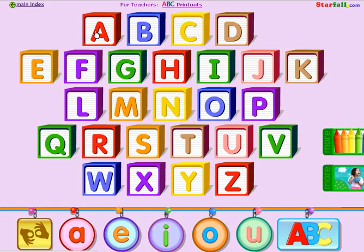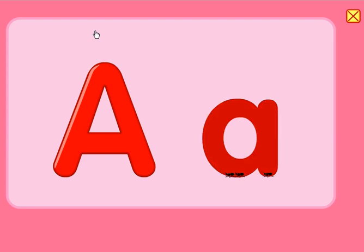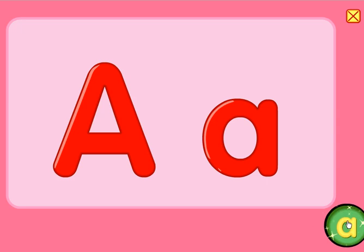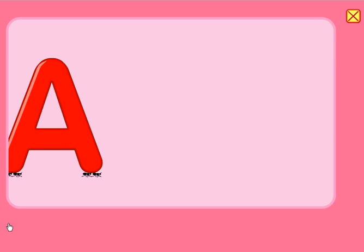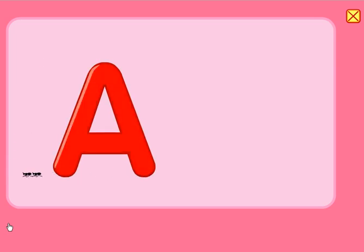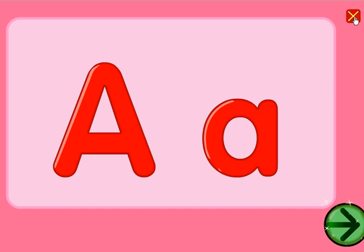Let's try the letter A. When you're done with that, click the green arrow to continue. If you want to go back, click the green arrow again. When you're done with that letter, click the yellow X at the top of the screen.